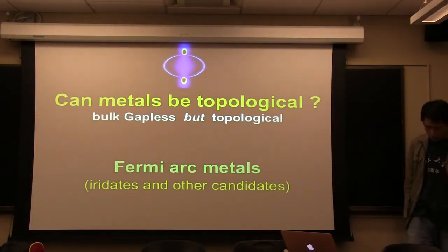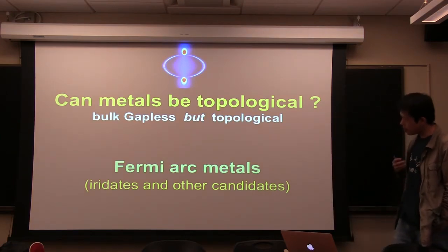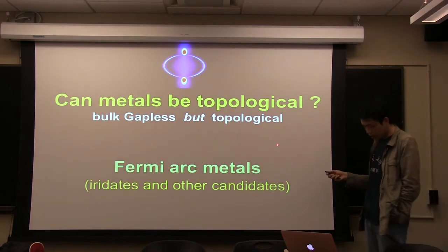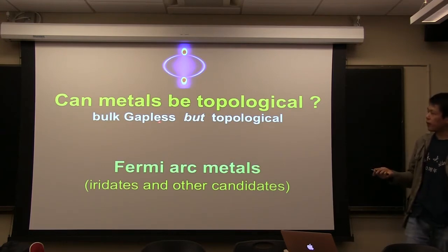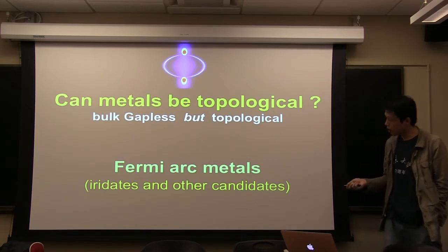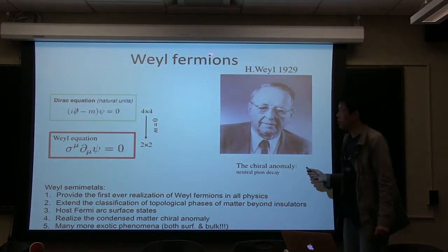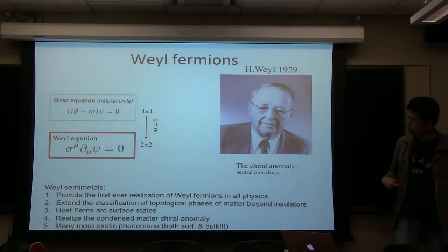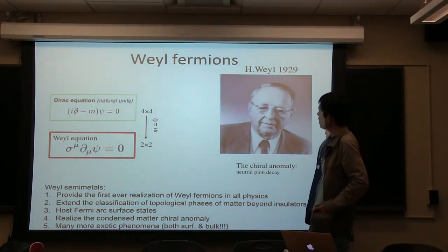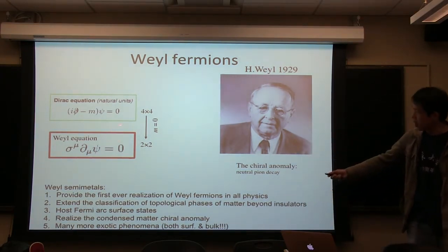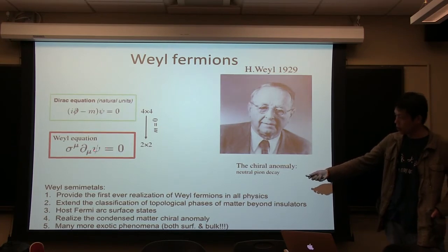Now let's go to our main topic. In topological insulators, the topological number — like the Z2 number — fundamentally requires the bulk to have a full insulating gap. But we want to ask: can metals also be topological? In metals the bulk will not have a full gap. So the question is how we define a topological number for a metal, and what would be the surface states corresponding to a topological metal? The answer turns out to be the so-called Weyl semimetal, where the low-energy excitations of the bulk obey the Weyl equation. Weyl fermions were proposed by Hermann Weyl in 1929. He found that if you take the 4×4 Dirac equation and take the mass term to zero, it reduces to a 2×2 equation — the Weyl equation.